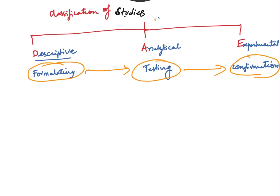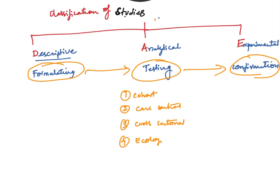The following studies come under analytical: first is the cohort study, also called a follow-up study; second is the case control study, also called a case reference study; third is the cross-sectional study, also called a prevalence study; and fourth is the ecological study, also called a correlation study.